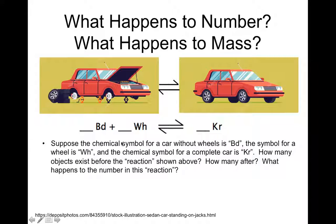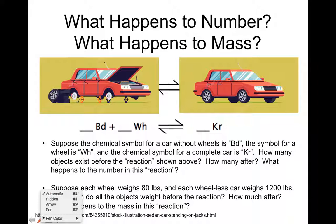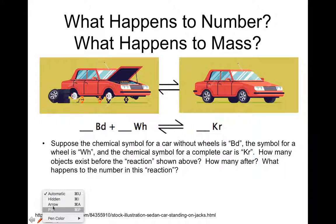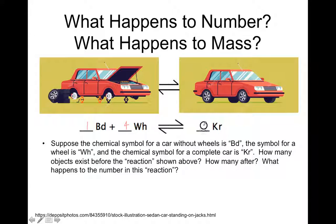So how many objects exist before the reaction shown above? There's one BD, and how many wheels? Four. So students are sometimes tempted to say one plus four must give five over here, but can you see how that's not right? How many complete cars do you see? Only one. So the number of objects before the reaction is five, and after it's only one — the number changes.